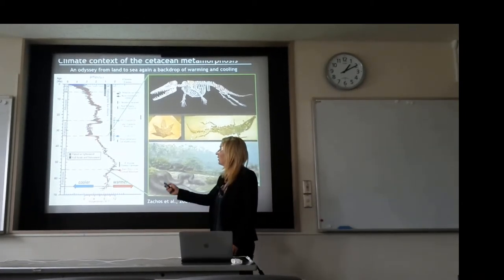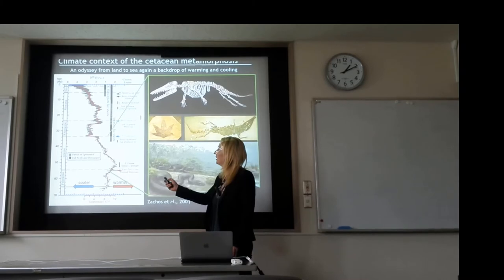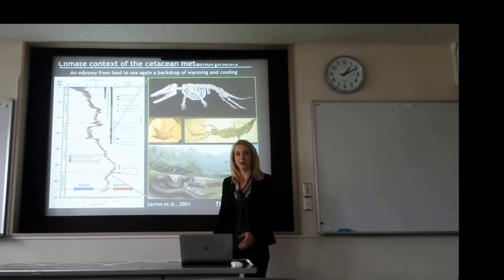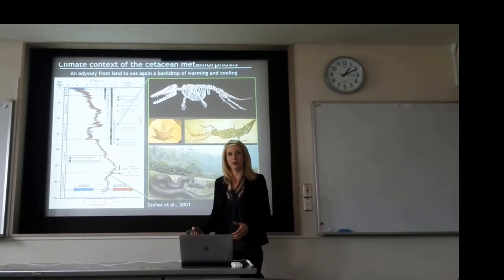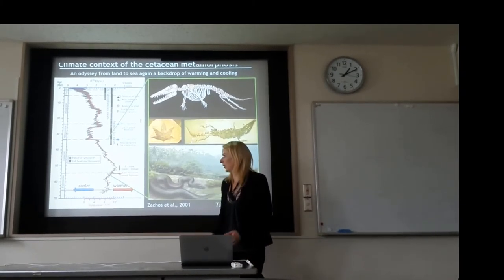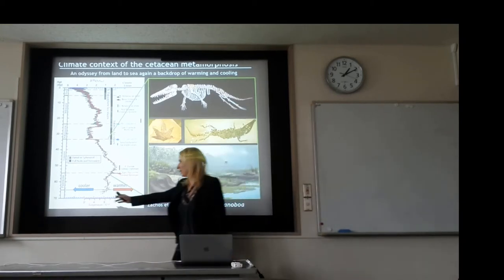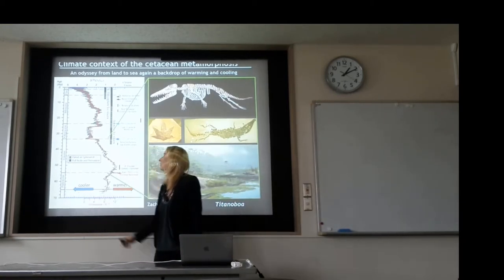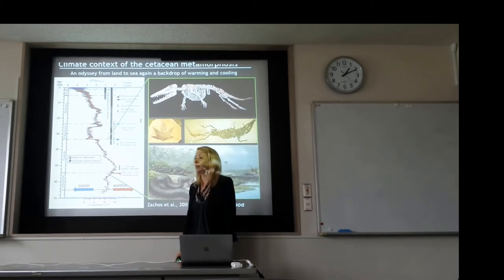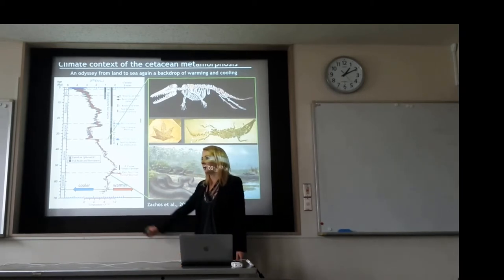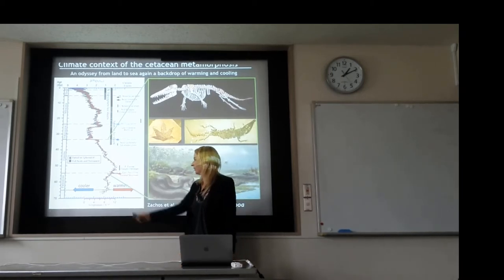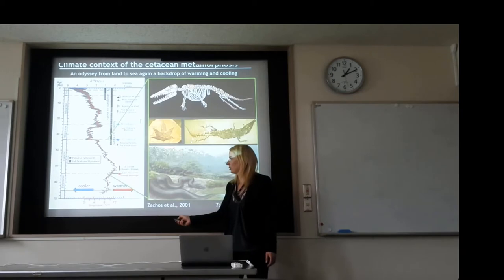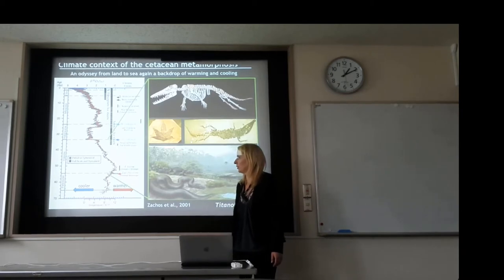This is reconstructed from oxygen isotopes. Oxygen isotopes tell us about temperature and ice volume. When we go to more positive values on the graph, it's getting cooler; when we go to more negative values, it's getting warmer. We have temperature superimposed at the bottom here.